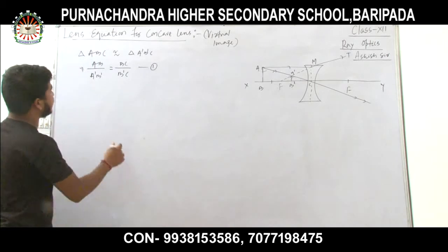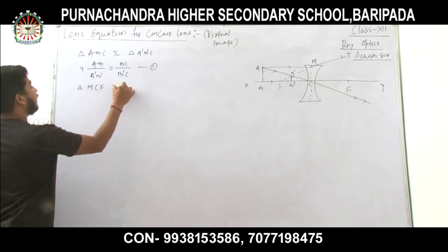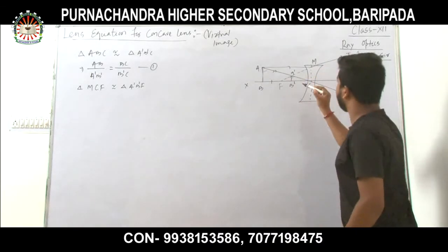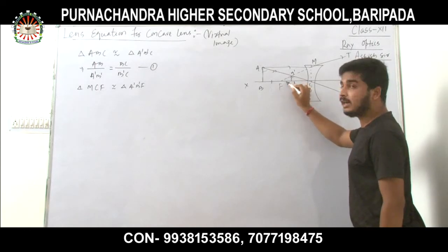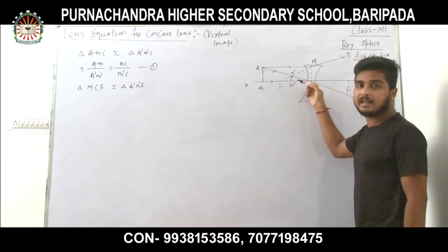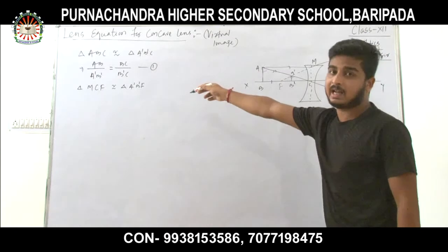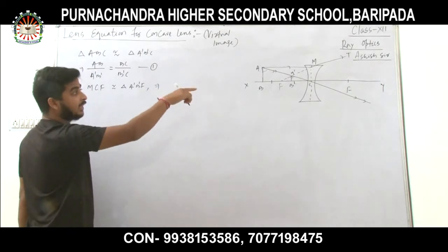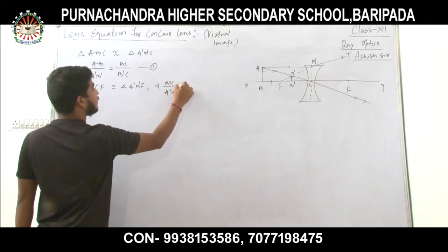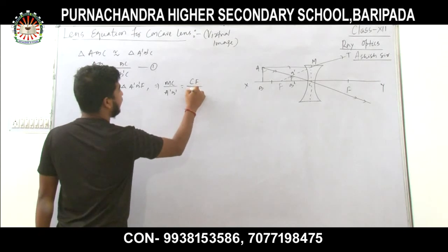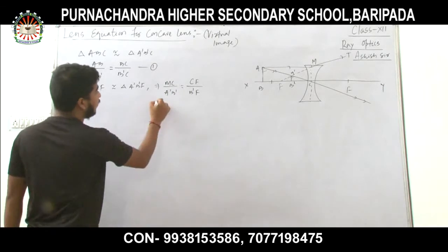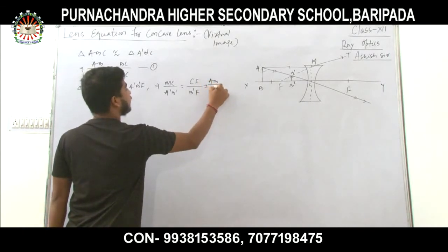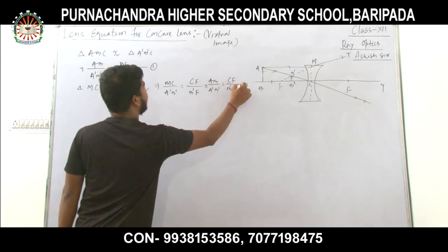Now consider triangle MCF and triangle A dash B dash F. These are also similar by angle-angle similarity: angle MCF = 90 degrees, angle A'B'F = 90 degrees, and the angle at F is common. So MC / A'B' = CF / B'F. Since MC equals AB, we can write: AB / A'B' = CF / B'F. Mark this as Equation 2.